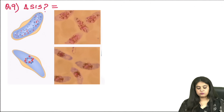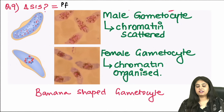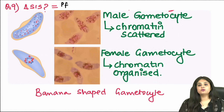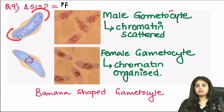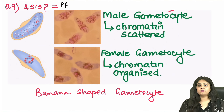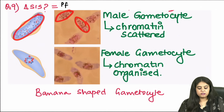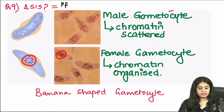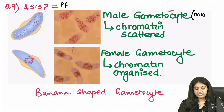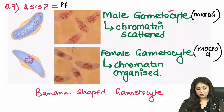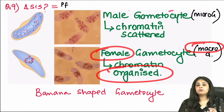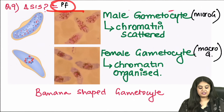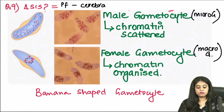Moving on to question 9: identify this peripheral smear — it is Plasmodium falciparum, based on the banana-shaped gametocyte shown. Males have broader ends and scattered nuclear chromatin, while females have slender pointed ends with well-organized nuclear chromatin. The male gametocyte is known as microgametocyte and the female as macrogametocyte. Plasmodium falciparum causes classical cerebral malaria, also known as malignant malaria.